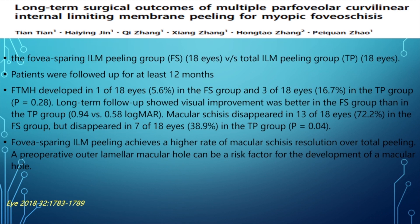A study by Tian et al. recruited 18 patients in each group. Full thickness macular hole developed in 5.6% of the foveal sparing group versus 16.7% in the total ILM peeling group. Long-term follow-up showed better visual improvement in the foveal sparing group, with macular schisis disappearing in 72.2%. They concluded that a preoperative outer lamellar hole can be a risk factor for macular hole development.